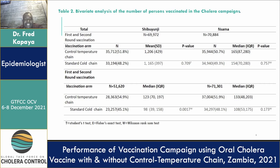What is interesting in this district is that during the second round, we had more logistical challenges. This goes to show that the CTC strategy actually works better in areas with more logistical challenges, especially in rural areas where the cold chain tends to be compromised.